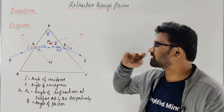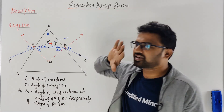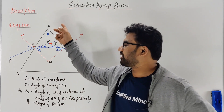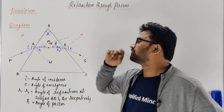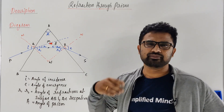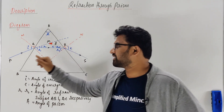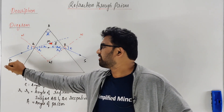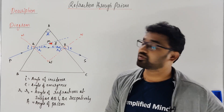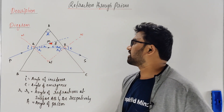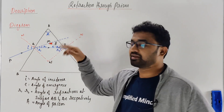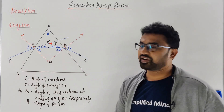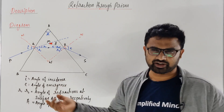So the description and diagram — it's very simple. You are taking a triangular prism of refractive index mu. The incident ray, we can call it PQ, which is incident on surface AB. It undergoes refraction in the prism — that is QR, the refracted ray. And RS is the emergent ray.